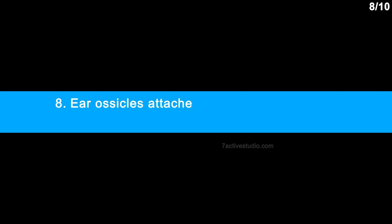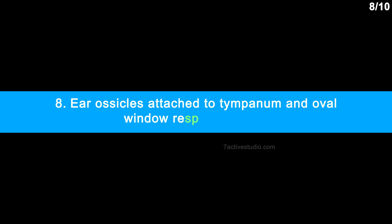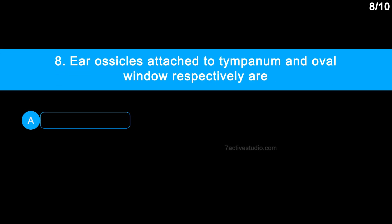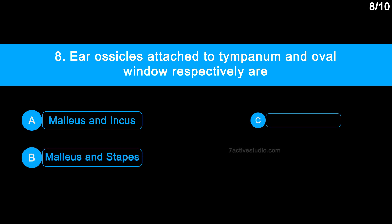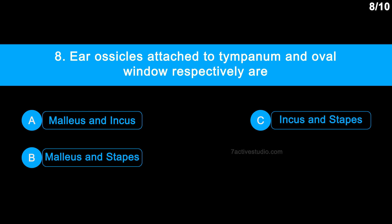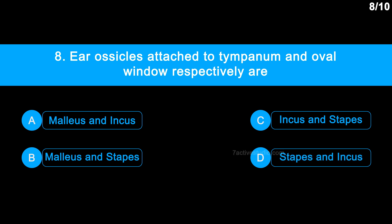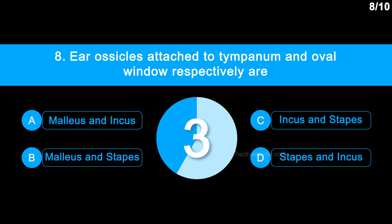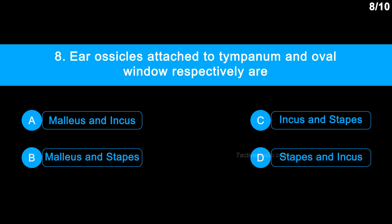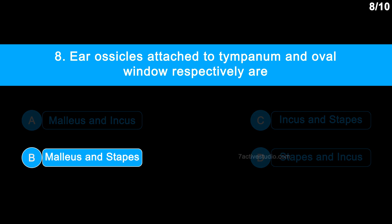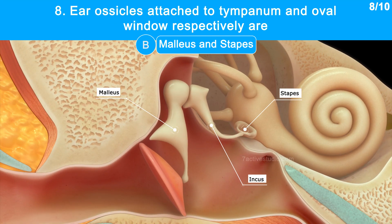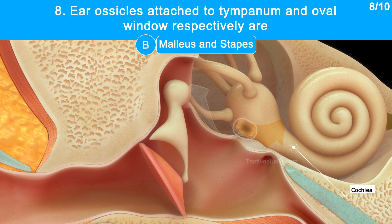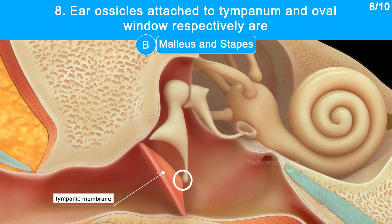Question No. 8: Ear ossicles attached to the tympanum and oval window respectively are — Option A: Malleus and incus. Option B: Malleus and stapes. Option C: Incus and stapes. Option D: Stapes and incus. The correct answer is Option B: Malleus and stapes. The middle ear has three ear ossicles linked together like a chain; the malleus is attached to the tympanic membrane and the stapes is attached to the oval window of the cochlea.